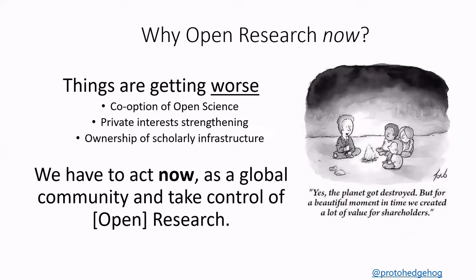Why is this important in a modern research environment? Depending on how you look at things, they are in some cases getting worse. What we're seeing, particularly in Europe, is the co-option of the open science space where private interests are strengthening and taking control, not just of the publishing process, but of the entire research process — from deciding who gets awarded grants to how researchers and their products are assessed. Some people will say it's already too late, that private corporations have taken control of the open science space, or that we're at least running out of time.